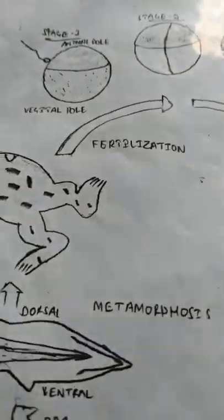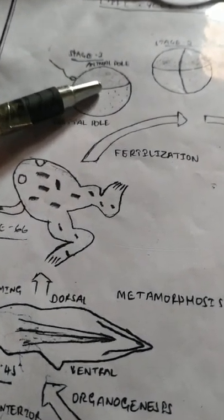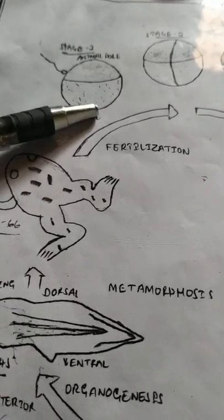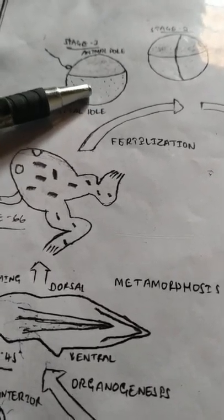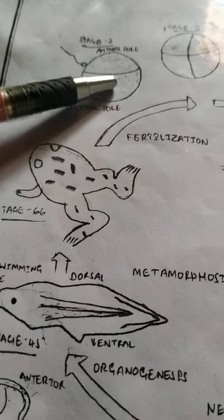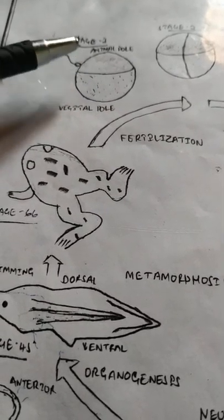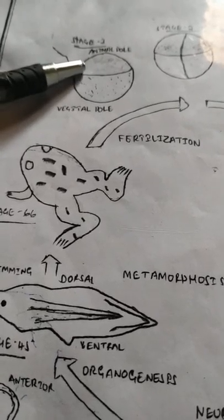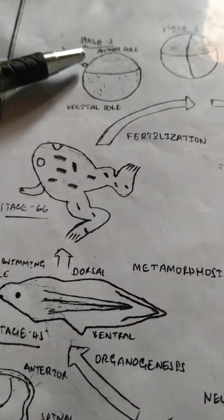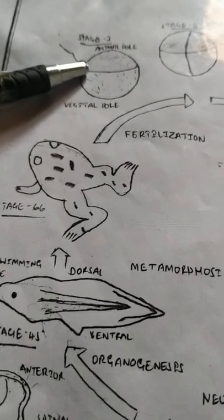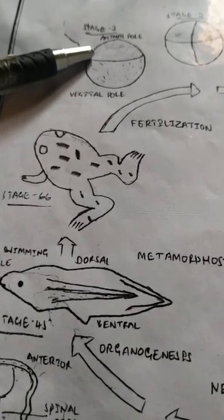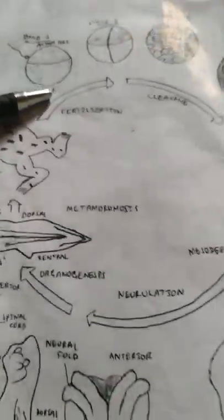The frog egg is highly dense with yolk and it shows polarity. Polarity means it has two poles: the animal pole, present at the upper side, and the vegetable pole, present at the lower side. The sperm enters the egg at the animal hemisphere. The point of sperm entry is important to determine dorso-ventral polarity — the point of sperm entry makes the ventral side, and the side 180 degrees opposite makes the dorsal side. There is internal cytoplasm which is gray in color, present opposite to the sperm entry point.